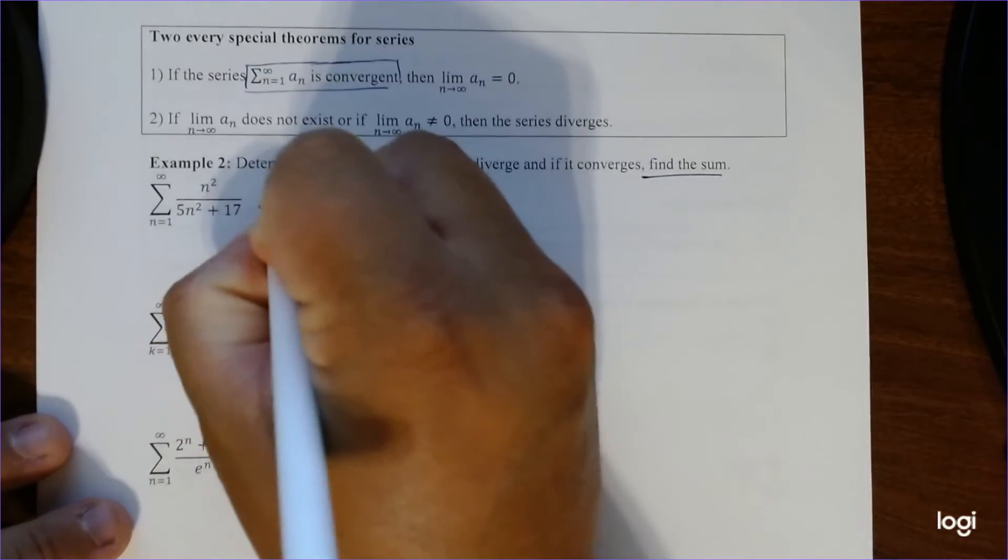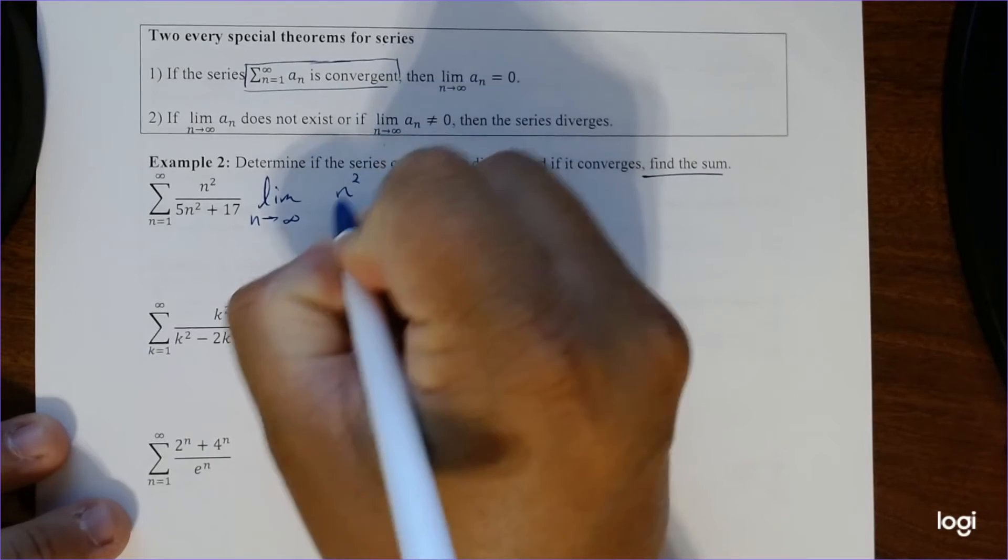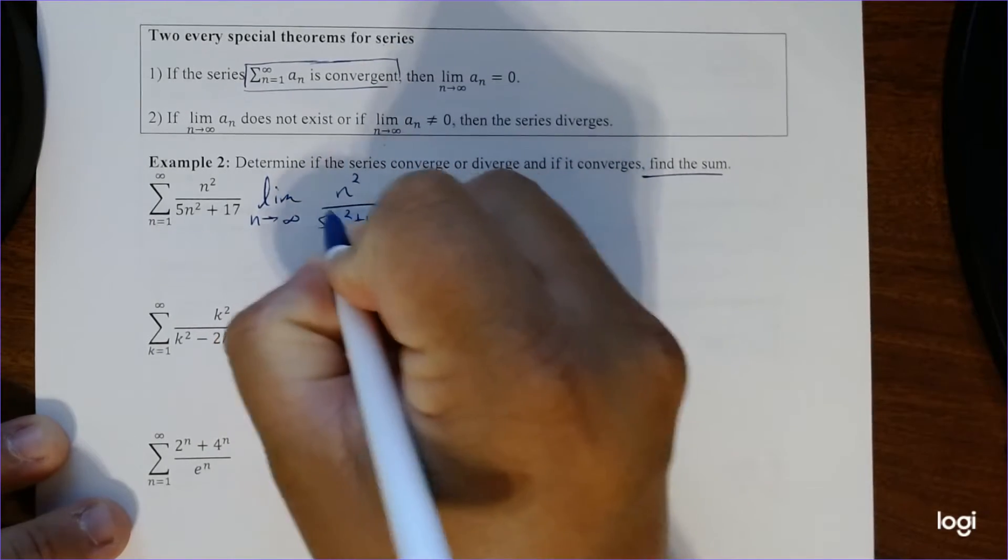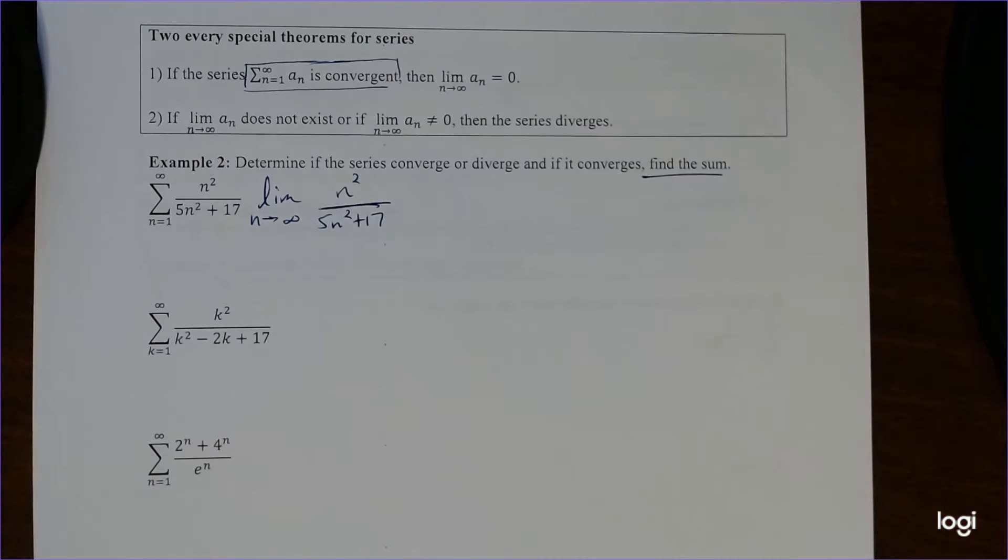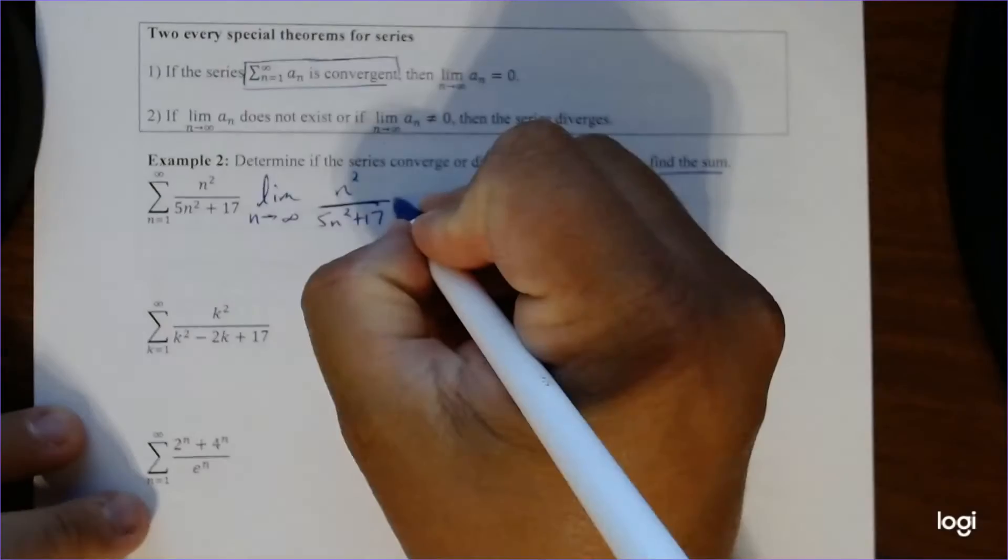Let's take the limit. So let's take the limit as n goes to infinity of n squared over 5n squared plus 17. So notice they both go to infinity, so we get to use L'Hopital's rule.